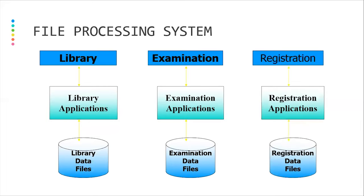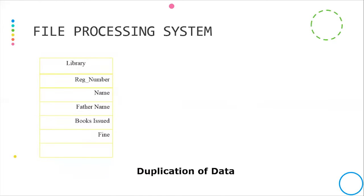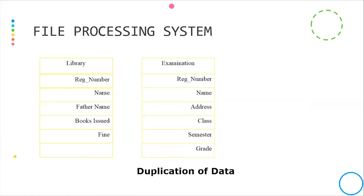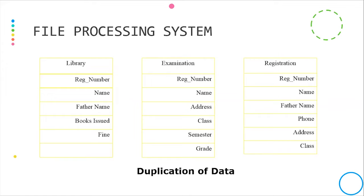After that, the registration office. There are three data stores. In the library: registration number, name, father name, book issue, and file. In the examination: registration number, name, address, class, semester, and grade. In registration: registration number, name, father name, phone number, address, and class.